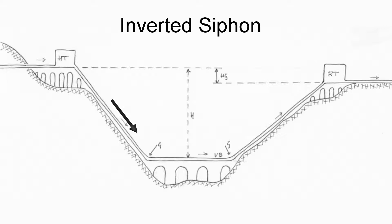However, there are issues with this approach. As the water rushes to the bottom of the valley, pressure inside the pipe increases greatly, approximately 1 atmosphere for every 10 meters of drop. The pipes, mostly made of lead or stone, were prone to leaking and bursting.